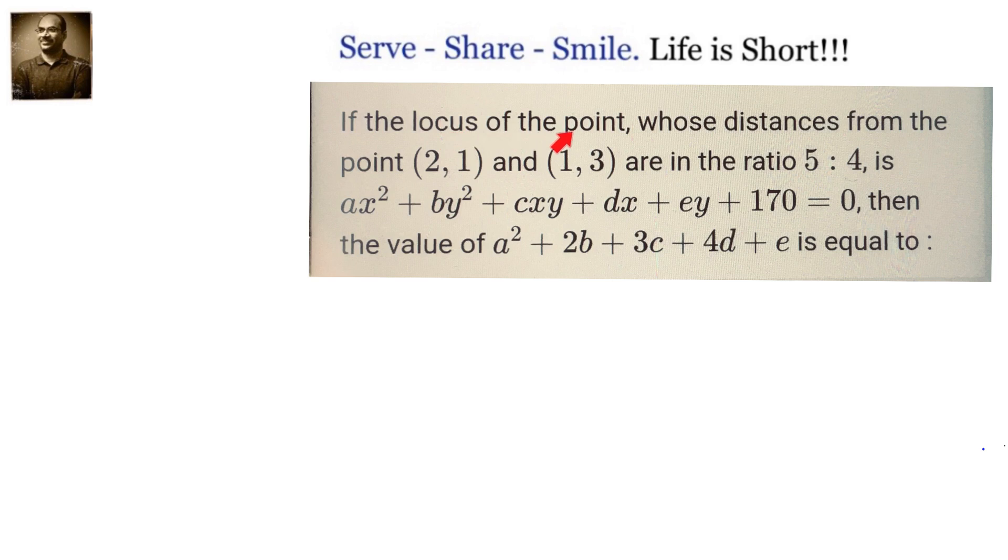If the locus of the point whose distances from the points (2,1) and (1,3) are in the ratio 5:4 is ax² + by² + cxy + dx + ey + 170 = 0, then what is the value of a² + 2b + 3c + 4d + e?